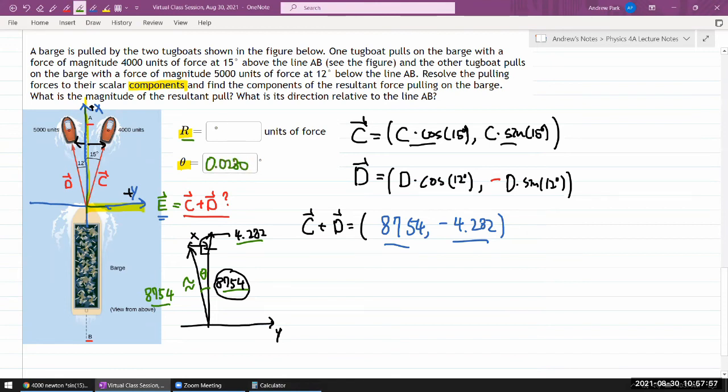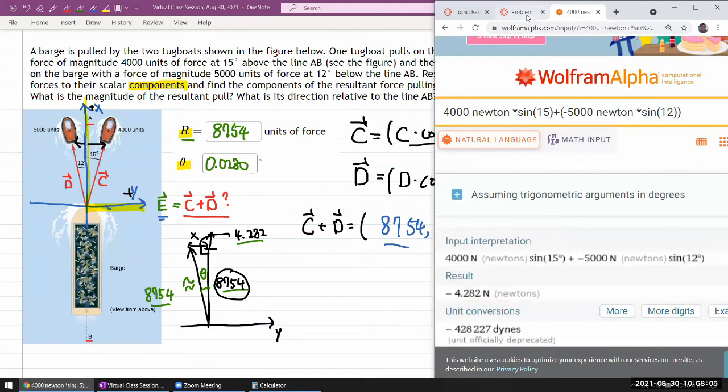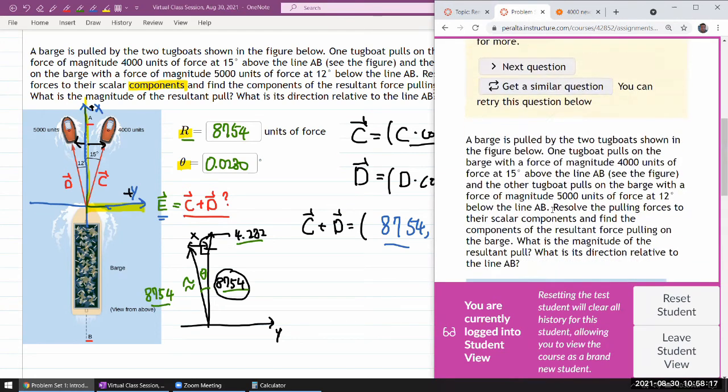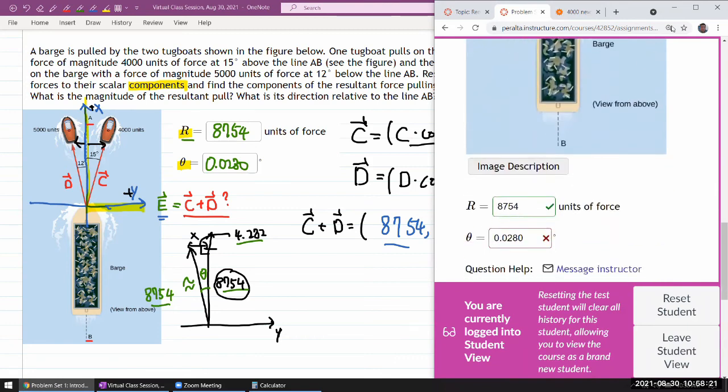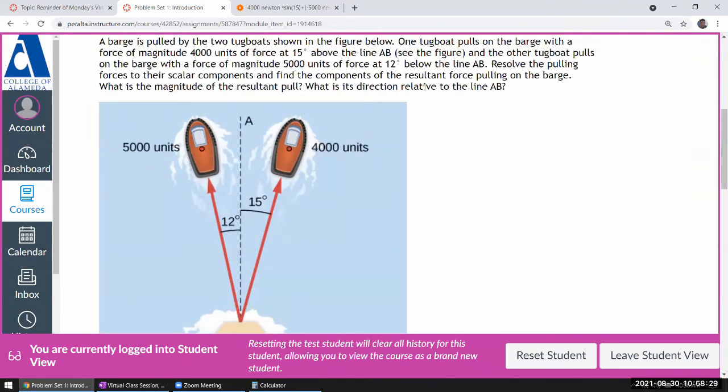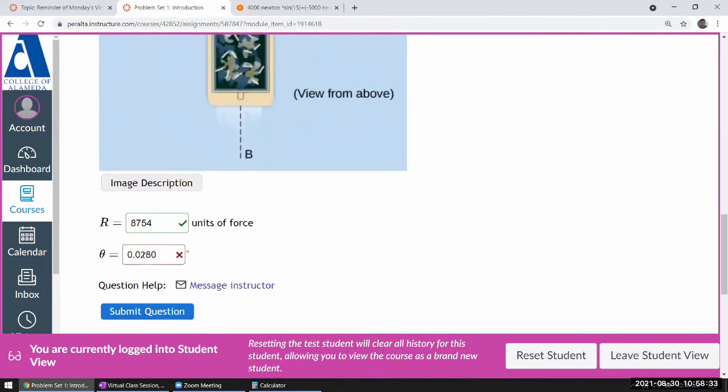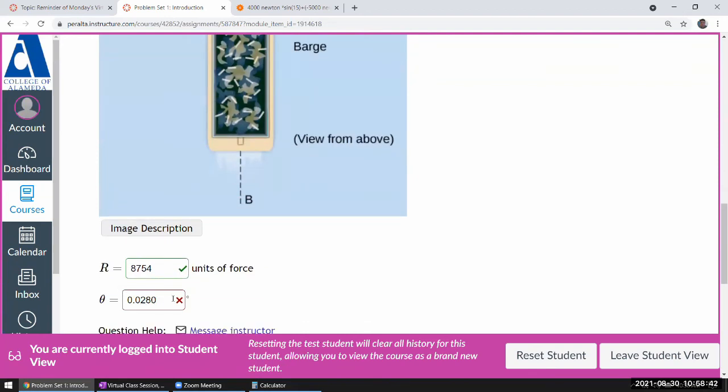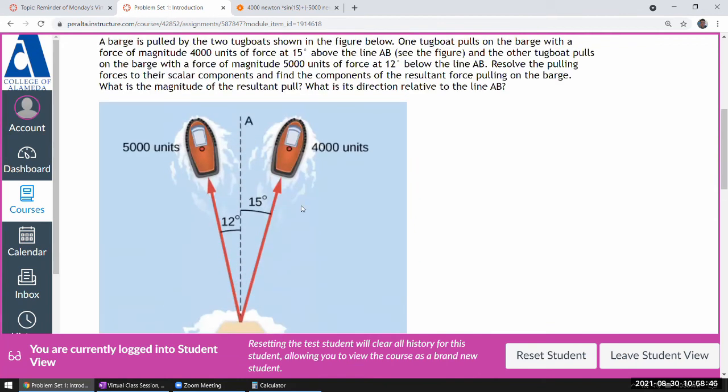So 0.0280 degrees. Now when I put in these answers, the system will say I got the radius right but not the angle. 8754 and 0.0280—it'll say I got half right. The reason is—and this is something that you all have to get used to over time—it's asking for what is the direction of the pull relative to the line AB. So this angle is being used to indicate the direction. Now this direction can go both ways. When you say 0.0280 degrees, it's actually ambiguous. Do I mean that angle to the right, or the way the question says above, or do I mean that angle to the left, or the way the question says below?